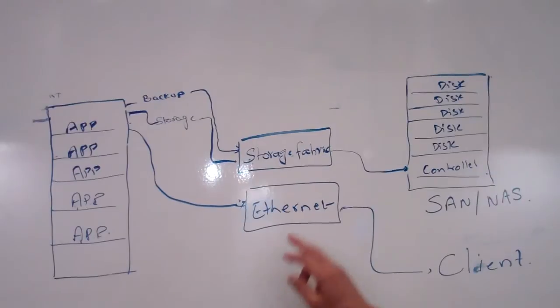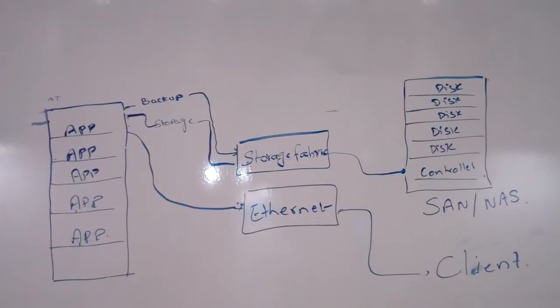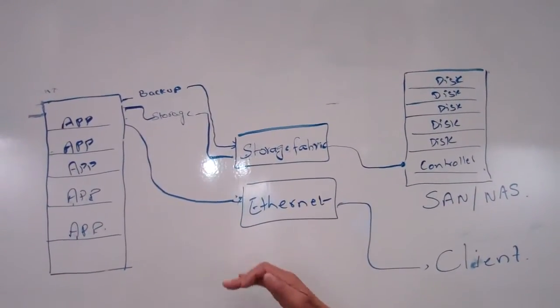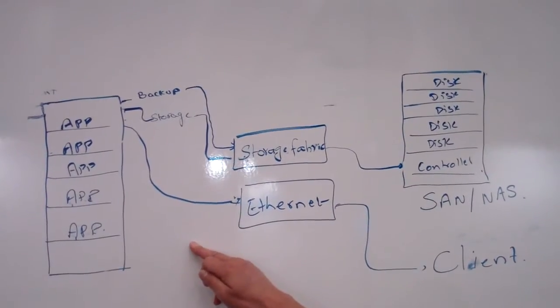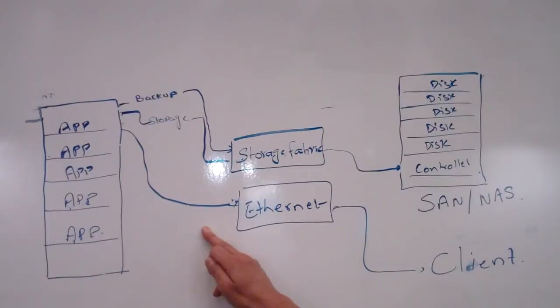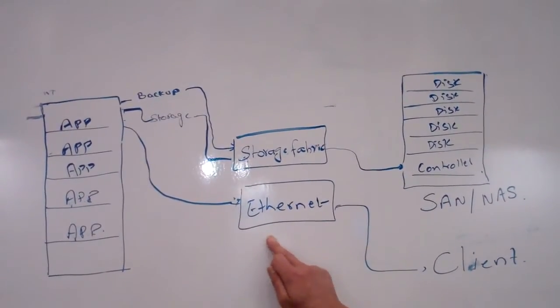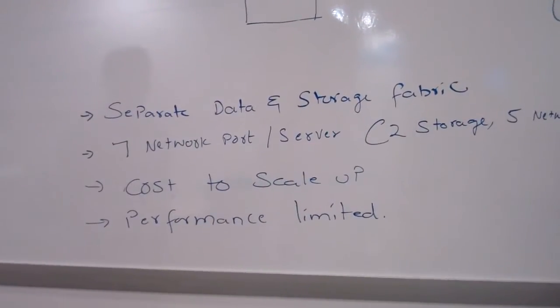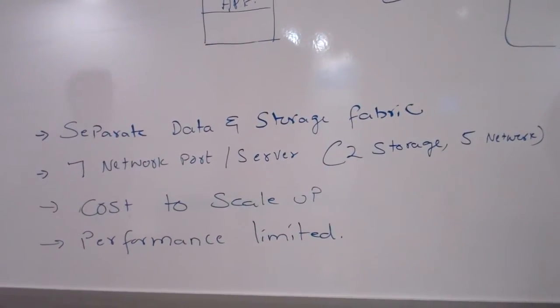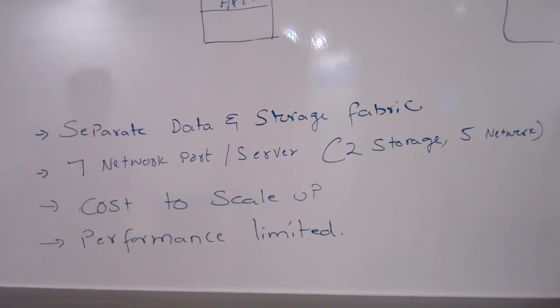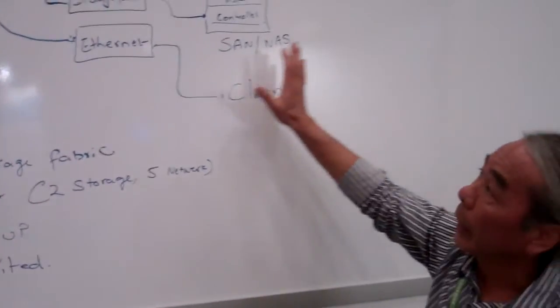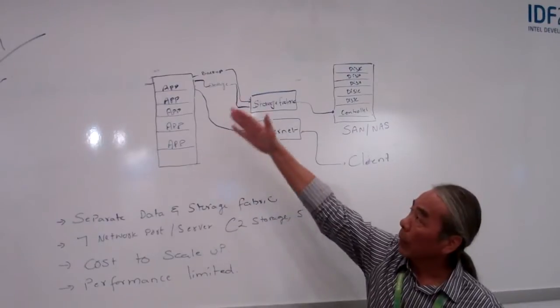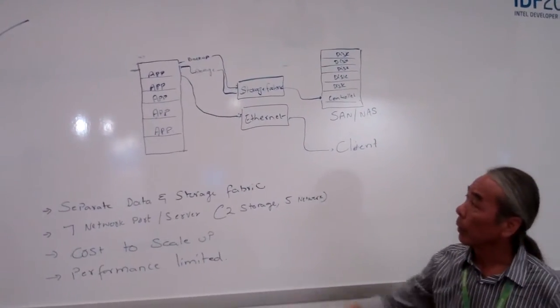So this depicts a separate data and storage fabric, and typically a lot of places you'll find a large number of network ports here. This only shows one, but typically you'll have a primary, a secondary for backup, you'll have your management network, and you'll have your out-of-band network. You'll have multiple Ethernet connections here. And you'll also find that here the cost of scaling up is very expensive when you try to scale up. And the performance is very limited in this model. So this is what you'll find today in a lot of shops, and you're going to find that it's not very flexible or agile when you start increasing your consolidation ratio over here on the host side.